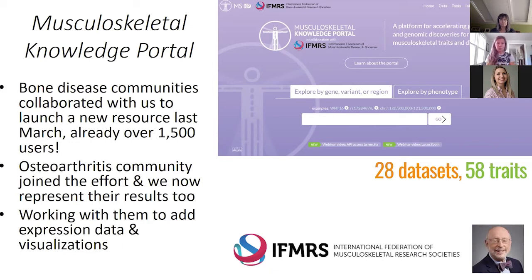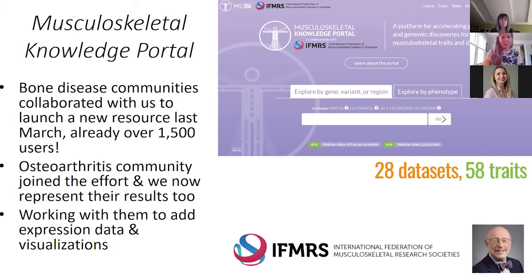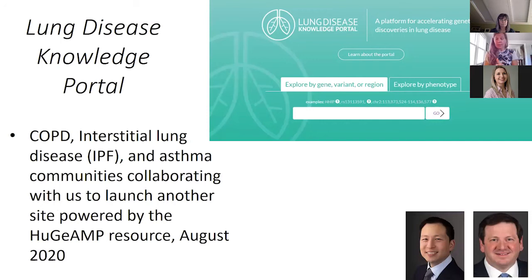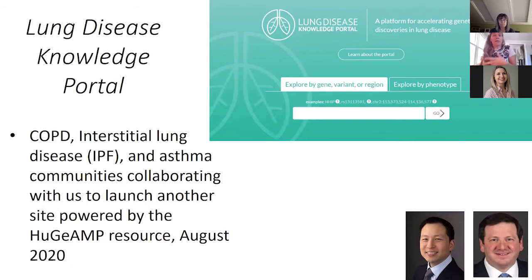For example, the musculoskeletal community cares about expression data, which we don't currently have a means to visualize on the portal. So we'll be working with them to bring in expression data relevant to cell types for musculoskeletal disease and build heat maps and other representations. That's what's really wonderful about having these communities. Same thing with lung disease — we're building a portal with Michael Cho and Benjamin Raby for lung disease, which has not launched yet. We hope to launch it this summer, though many people in the lung disease world are currently distracted with more pressing matters. They will be bringing in EQTL results and visualizations for EQTLs in the context of lung disease.